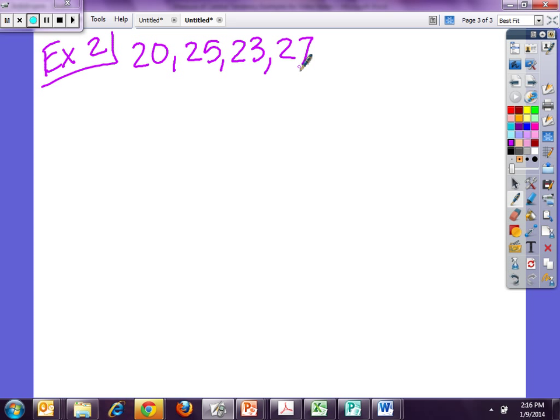So to find the mean, I add them all together, I get 95. I divide by 1, 2, 3, 4 data points. Then I'm going to get a decimal. I get 23.75.